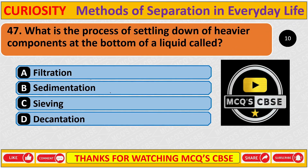Question: What is the process of heavier components settling down at the bottom of a liquid called? Correct answer is B: Sedimentation.